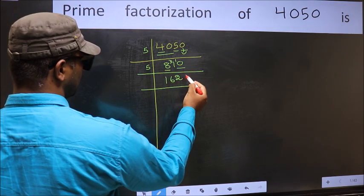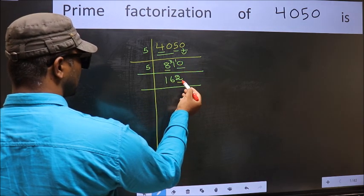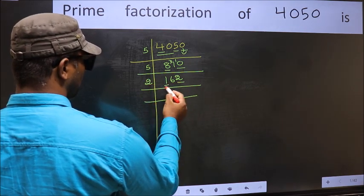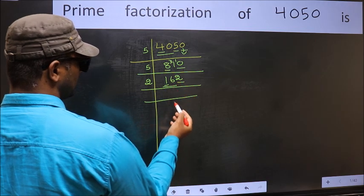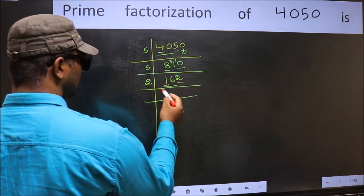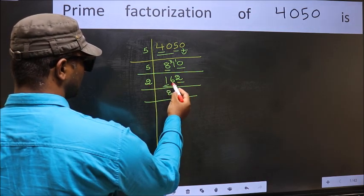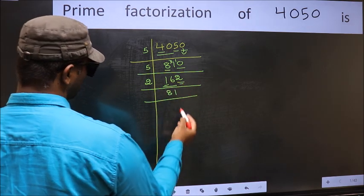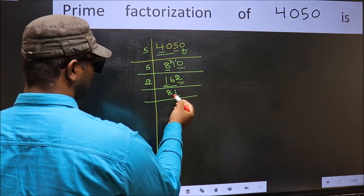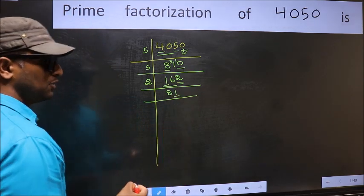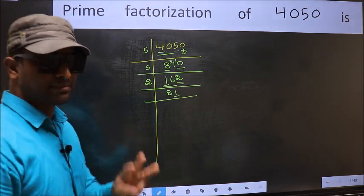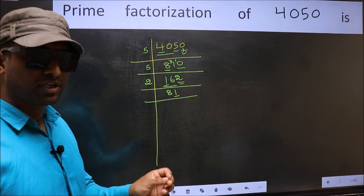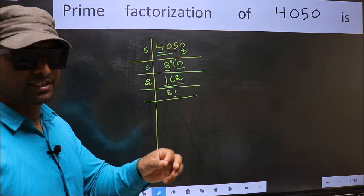Now the last digit is 2, which is even, so take 2. First number 1 is smaller than 2, so take two numbers: 16. When do we get 16 in the 2 table? 2 eights are 16. The other number is 2. When do we get 2 in the 2 table? 2 once is 2. Now the last digit is 1, which is not even, so not divisible by 2. Next prime number: 3. To check divisibility by 3, we should add the digits.